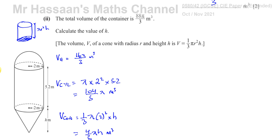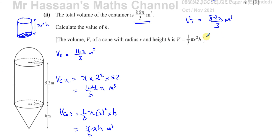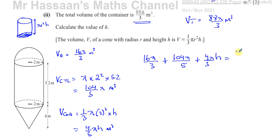We know the total volume of all three shapes is 88π/3 meters cubed. So adding the three volumes: 16π/3 + 104π/5 + 4πh/3 = 88π/3. We can divide everything by π since it's common in every term — this is an advantage of keeping answers in terms of π, giving us exact values.